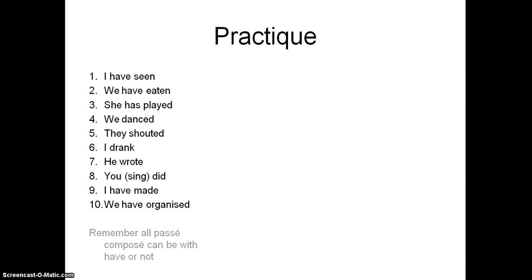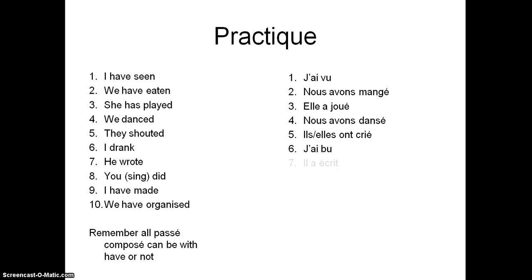Okay, the answers. So the first one, j'ai vu. You notice that the first three here we've got the word have or has. The second one doesn't have that in there, but it's still with the passé composé. We danced. Nous avons dansé. They shouted. Ils ou elles ont crié. I drank. J'ai bu. He wrote. Il a écrit. You did singular. Tu as fait. I have made. J'ai fait.